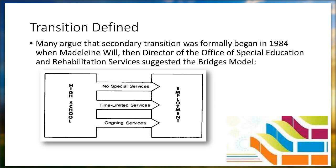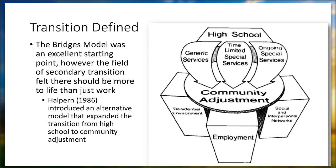The field quickly decided there was more to life than just work. Andy Halpern talked about transition from high school to community adjustment, with three bridges — generic, time-limited, and ongoing special services — resting on three pillars: residential environment, employment, and social interpersonal networks. So transition expanded beyond just employment to full community adjustment and adulthood.